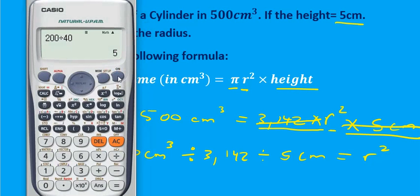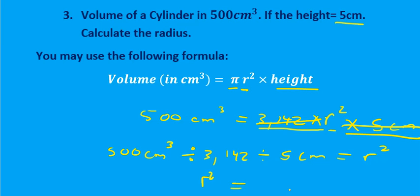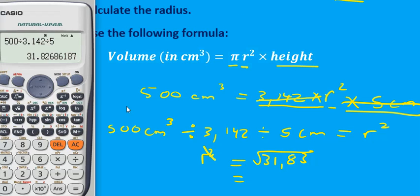On your calculator, take 500 divided by 3.142 and then divide by 5. It gives you radius squared of approximately 31.83. We are not looking for the radius squared, so we need to cancel out the square. The inverse of a square is a square root, so we square root the other side: the square root of 31.83 gives us a radius of 5.64 centimeters.